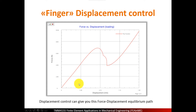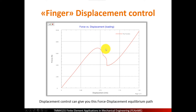The force response looks like this: first a quite linear behavior, then it reaches a limit point, and you get an unstable behavior until it reaches a stable point again and the stiffness becomes positive. If you're not using displacement control — which is stable because there is a unique solution for each incremental displacement added — then you have to use arc length control. Otherwise the simulation will snap through to the stable condition and then increase the force. You can also notice there is almost a snapback behavior here, meaning the displacement control is almost singular in that region. That's a challenge.